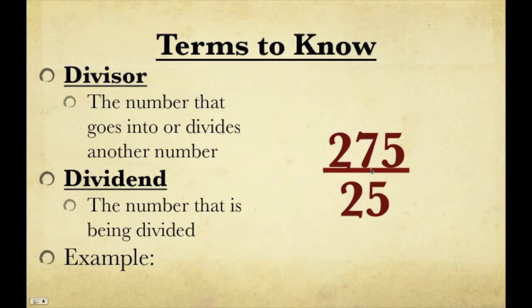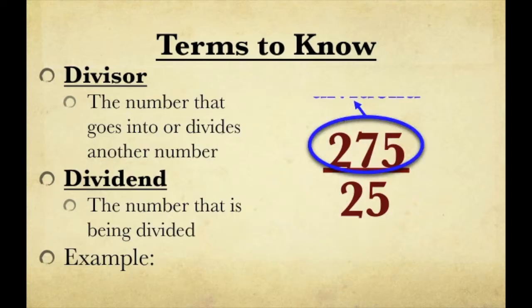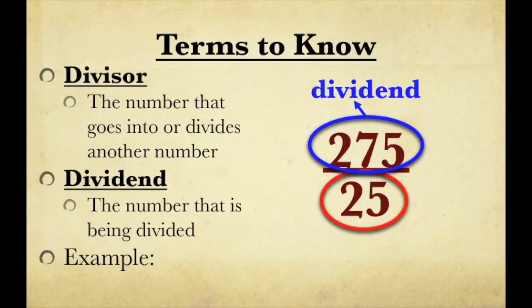Here, even though it looks like a fraction, this actually also represents division, where the top number, 275, is our dividend, because it's being divided by the denominator, or the bottom, which is 25 — that makes it our divisor.